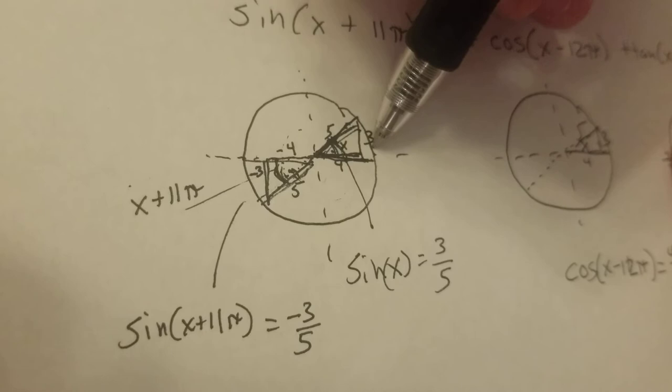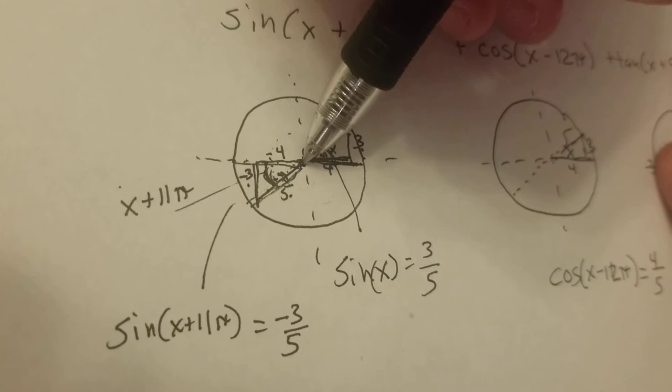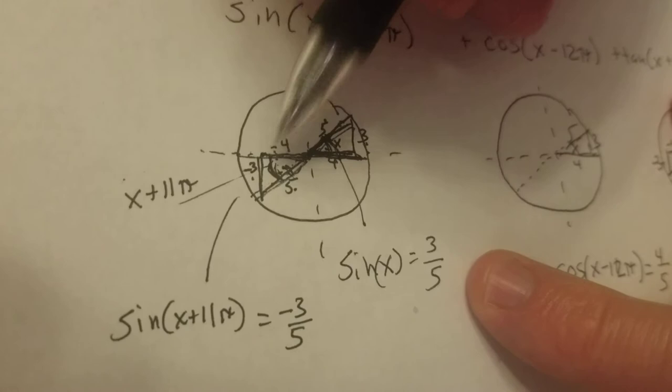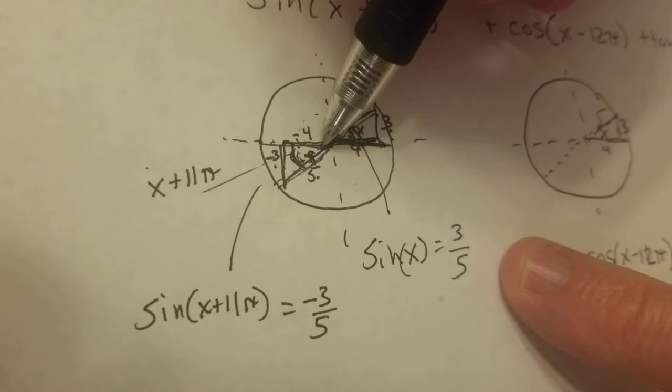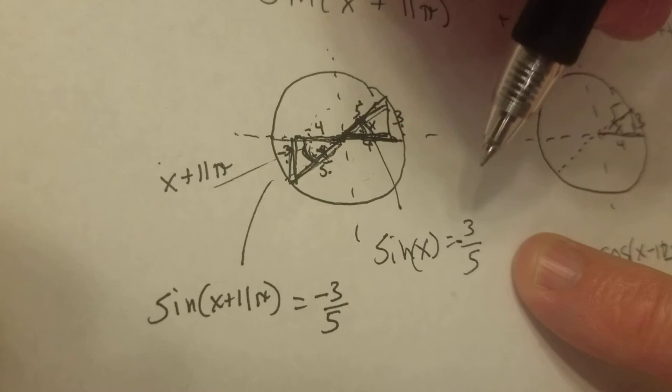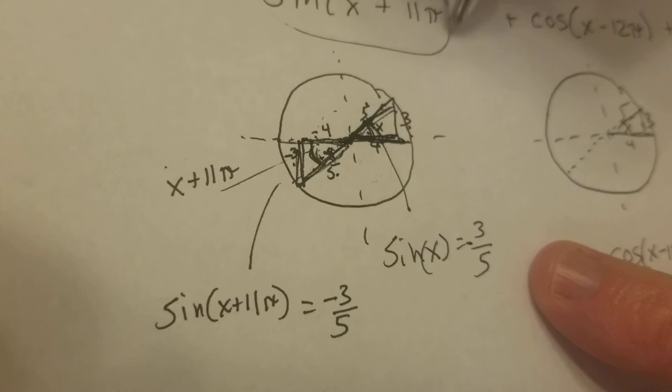So x plus 11 pi is on the exact, if that angle over here is x, the angle that's exactly opposite right there is x plus 11 pi. And so what I have is, I have a triangle over here that is 3, 4, 5. Well, this triangle is just the mirror image of it. It's 3, 4, 5. But if this is the center, this is plus direction and up is plus direction. Going to the left is minus direction. So the sine of this angle over here, which is x plus 11 pi, is minus 3 over 5. So the sine of x plus 11 pi is minus 3 over 5, so that's your first term.